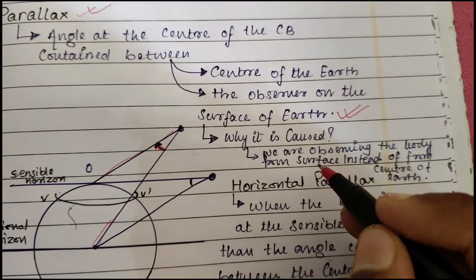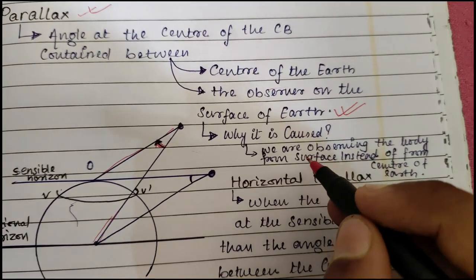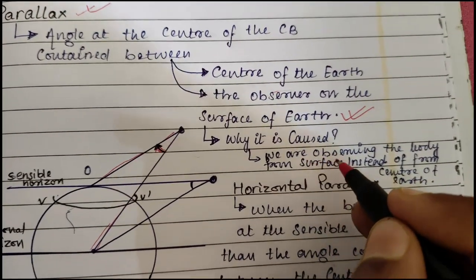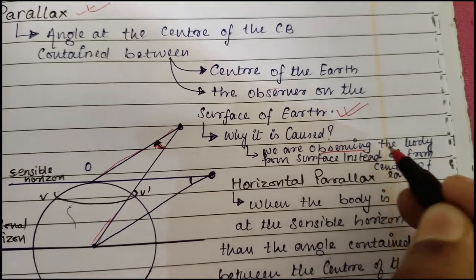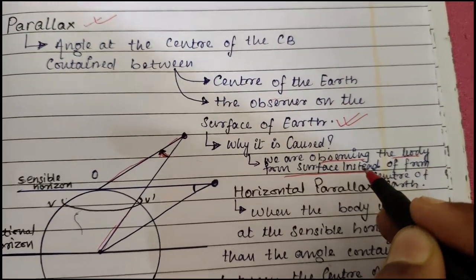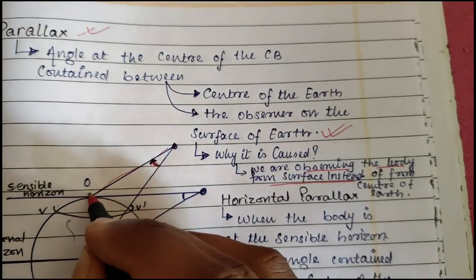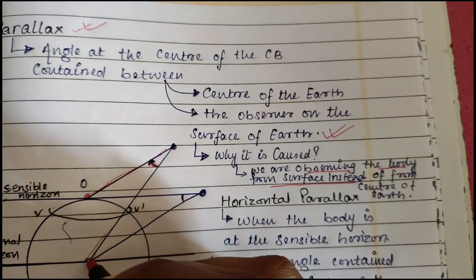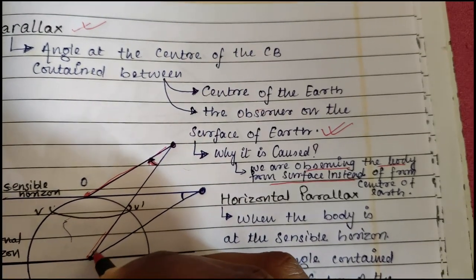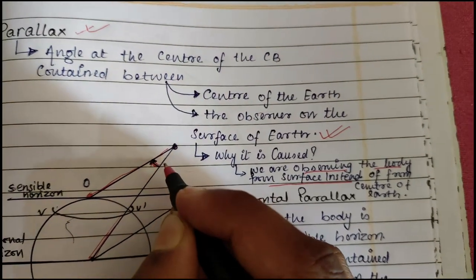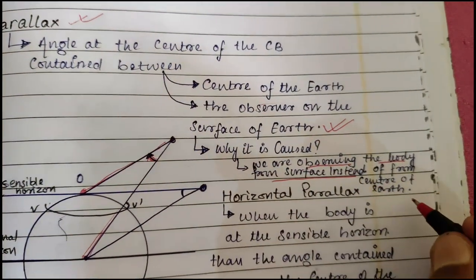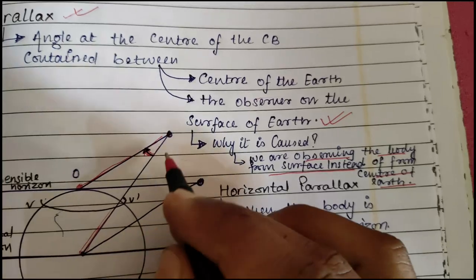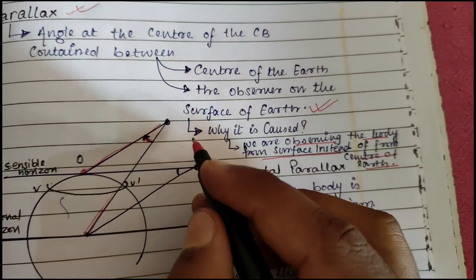But why is it caused? It is caused because we are observing the body from the surface, not directly from the center of the earth. Therefore there is a parallax.